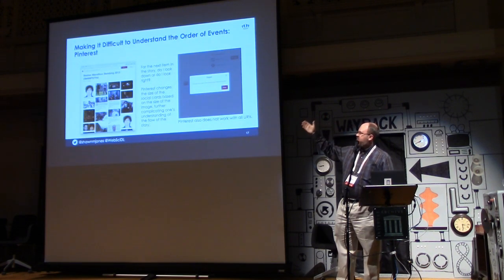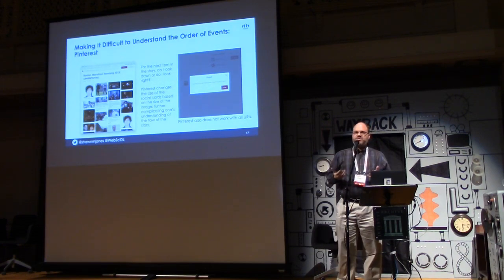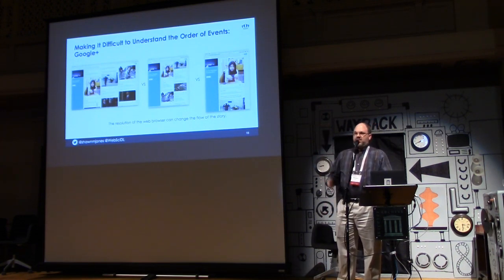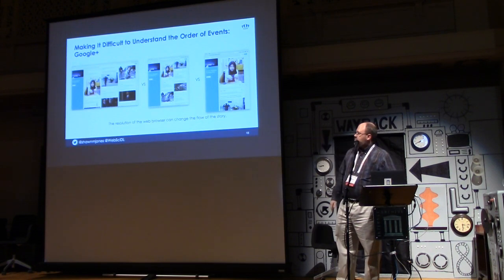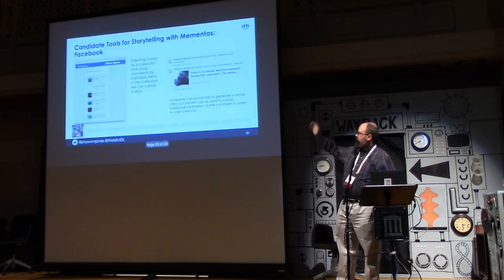With Pinterest, for example, you've got wonderful images but you can figure out the story starts in the upper left-hand corner — do you go down or do you go right? And once you've gone right, which is the next item? It makes it very difficult from a visualization perspective to figure out where you are in the story. Google Plus makes this difficult because it changes the order and shapes of the cards when you put them in. I came down to four tools — Facebook, Tumblr, Storify, and Twitter — that seem to actually be good for this technique.